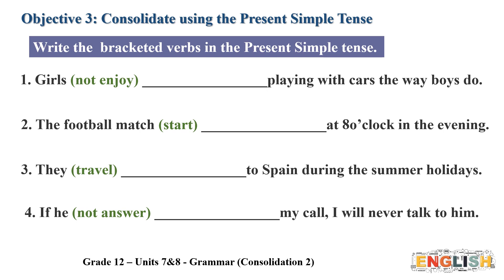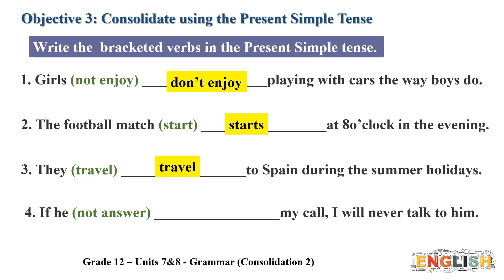Please pause the video and write the bracketed verbs in the correct present simple tense. The answers are: sentence one — 'The girls don't enjoy'; sentence two — 'The football match starts' (verb takes an 's'); sentence three — 'They travel'; sentence four — 'If he doesn't answer.'